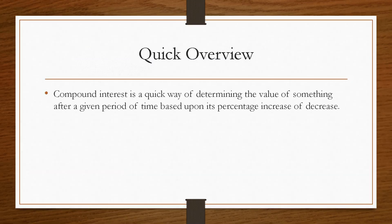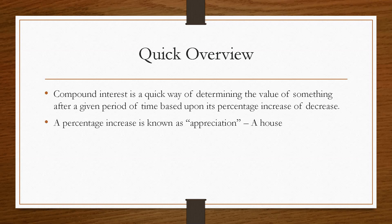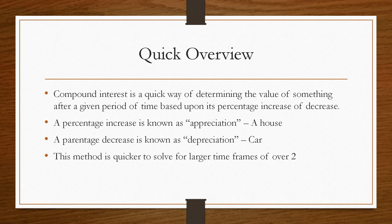So let's take a quick overview. Compound interest is a quick way of determining the value of something after a given period of time based upon its percentage increase or decrease. A percentage increase is known as appreciation, so things that go up in value, usually a house. And a percentage decrease is known as depreciation, so things whose value goes down over time, for example a car. This method is quicker to solve for larger time frames of over 2.